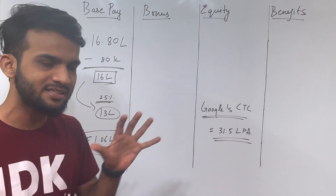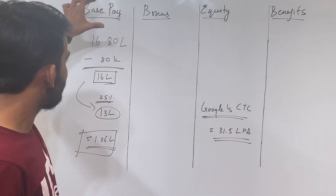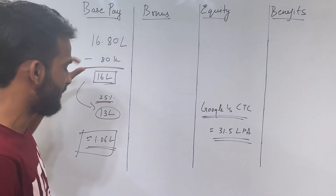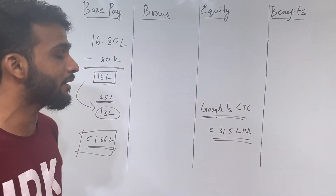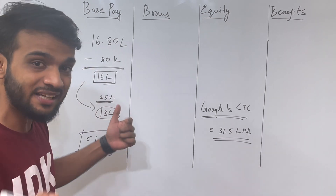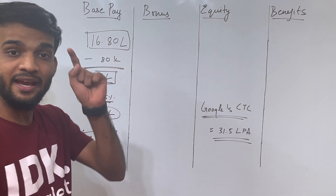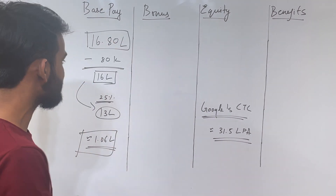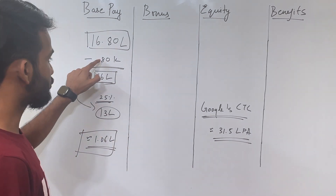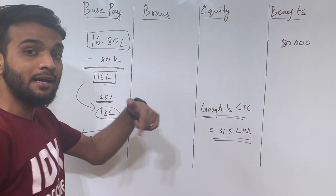You might be wondering where the other components like Gratuity and Medical Insurance are — everything is covered under the benefits section. Over in Amazon, the base also had PF, company's PF was there, and there was something like Gratuity and Pension Plan — everything was covered inside your base pay. But for Google, 16.80 is your base and 80,000 is the PF amount that you pay. You're paying 80,000 and the company also pays 80,000 — so this is what is paid by the company as a benefit.